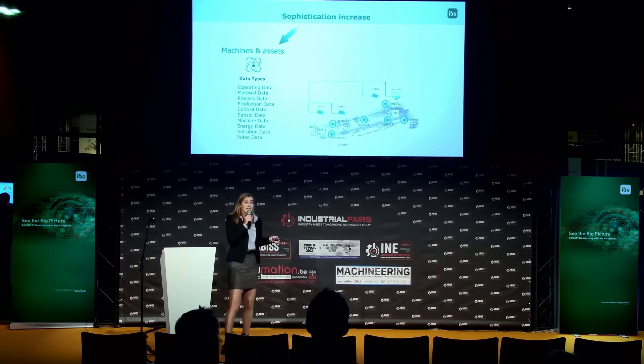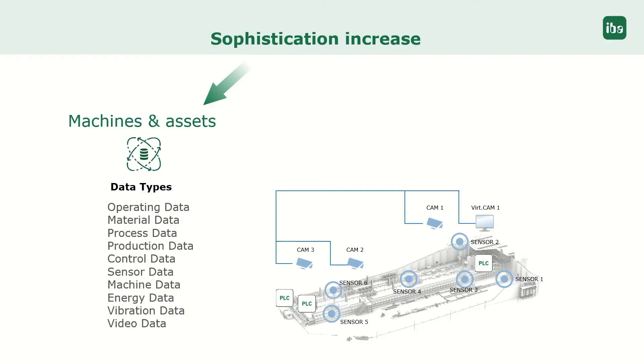Nowadays a production line kind of looks like this, with multiple PLCs, multiple sensors, multiple cameras and so on. So it became a quite complex production line.